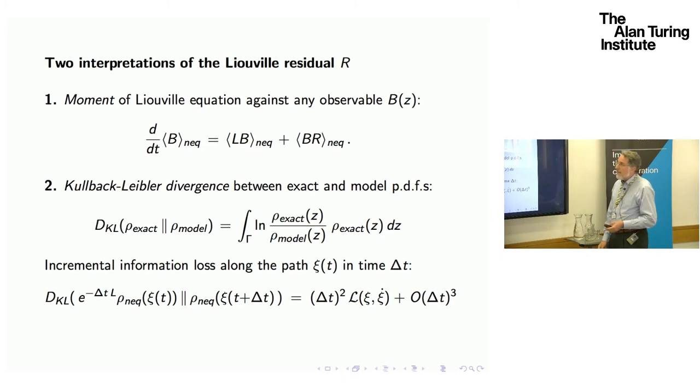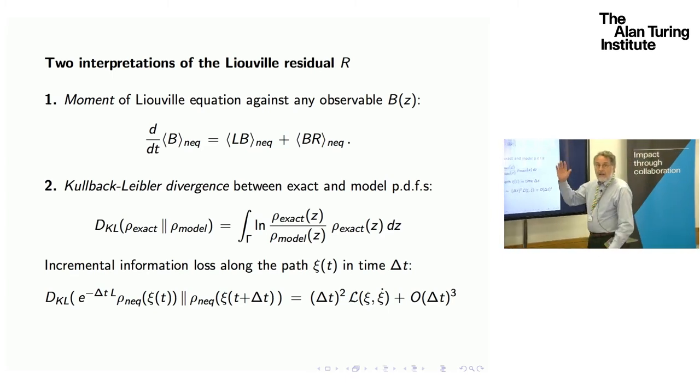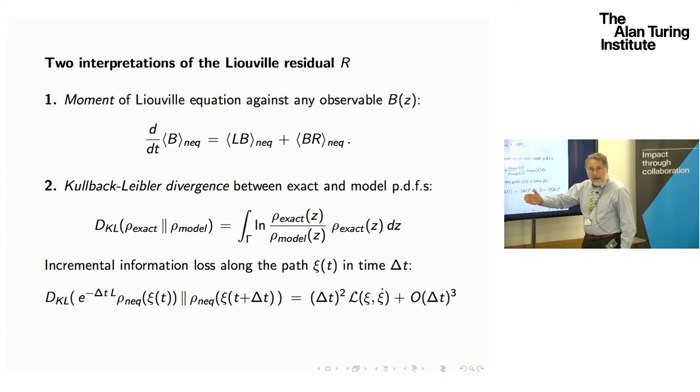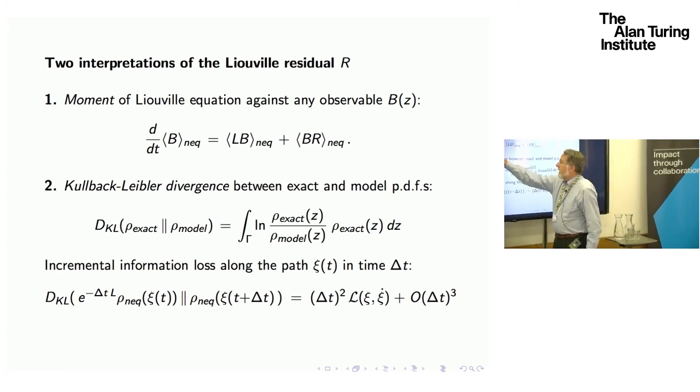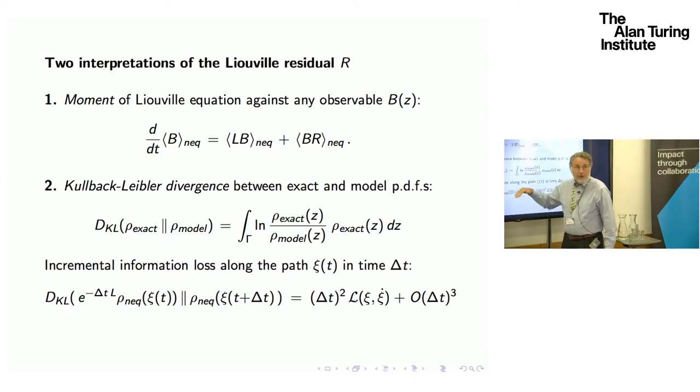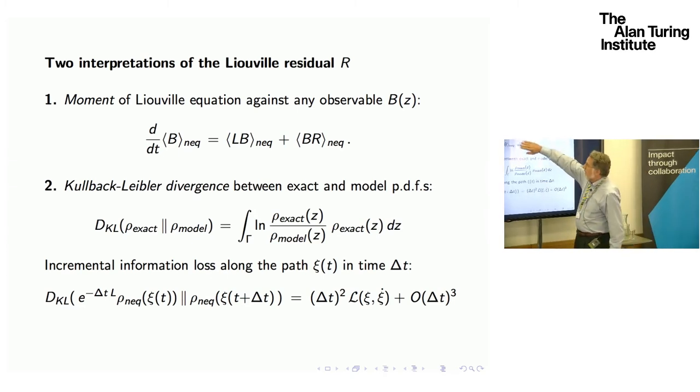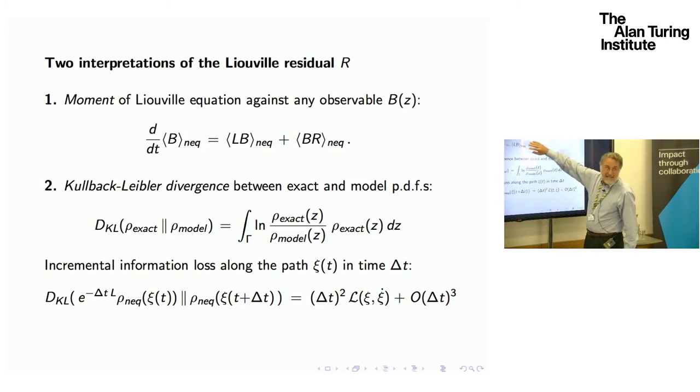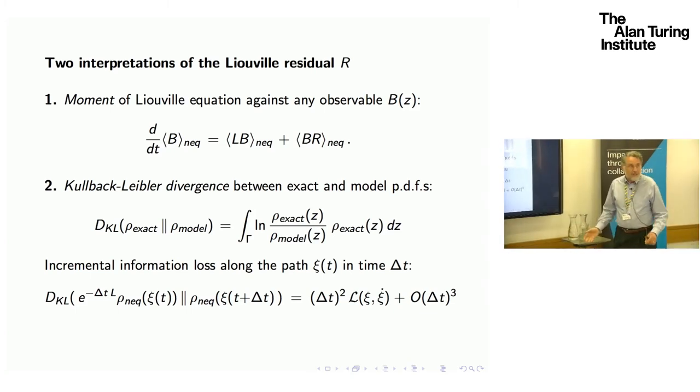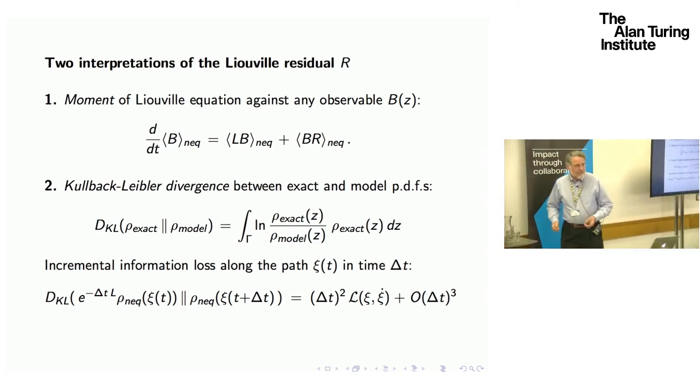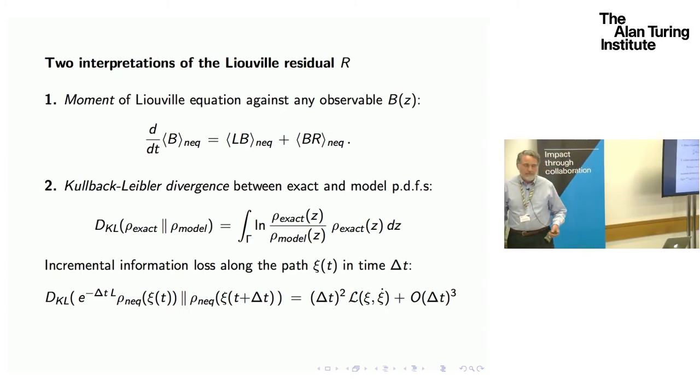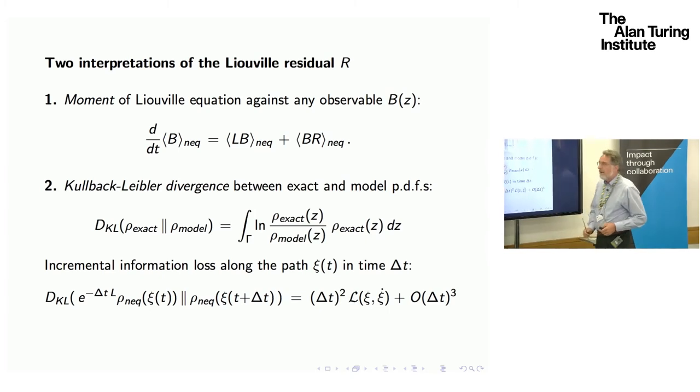For instance, if you were to do the naive moment closure and just say, I have a set of observables A1 through AM, I'll close the system by simply saying that this equation is now true for the trial propagation. That's the Galerkin projection of the Liouville equation. Then this would be taken to be exactly zero. What you obtain is a completely dissipationless dynamics. You refuse to acknowledge that you're not resolving everything. It's very key that you bring this term in.